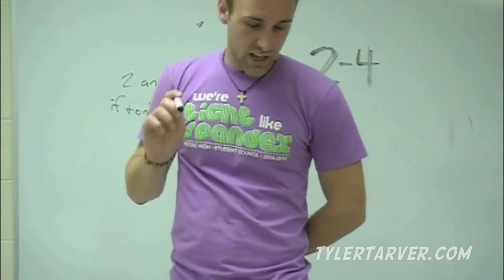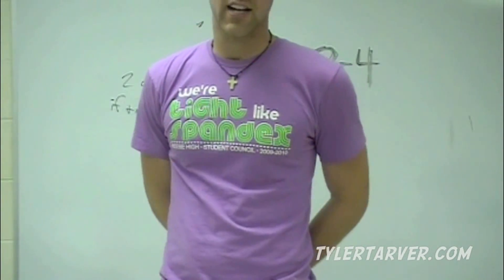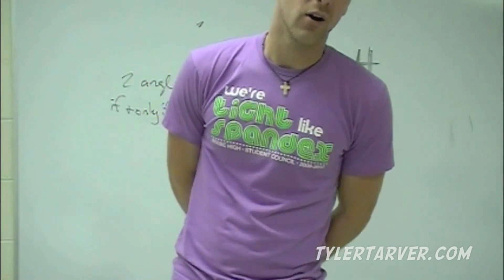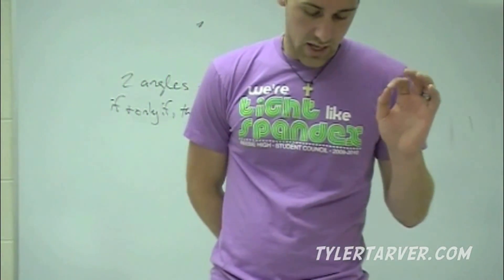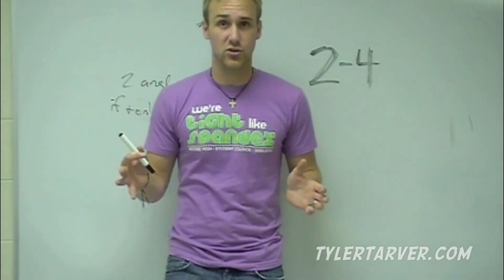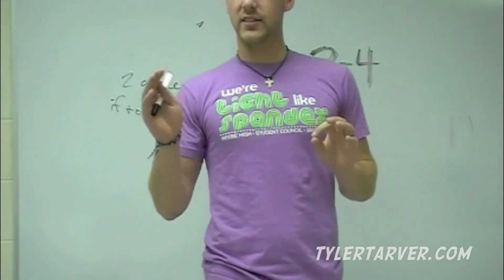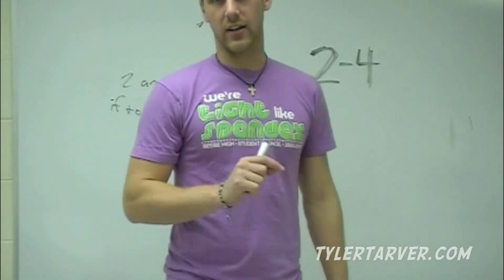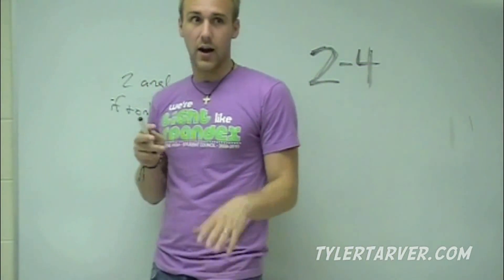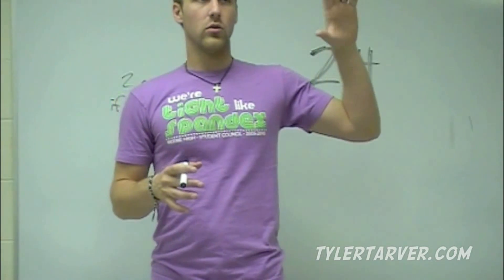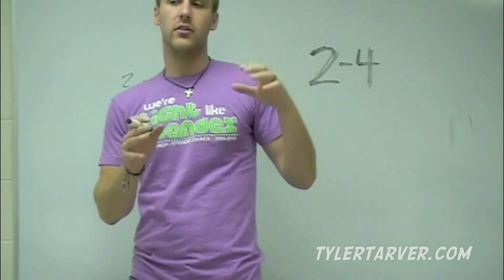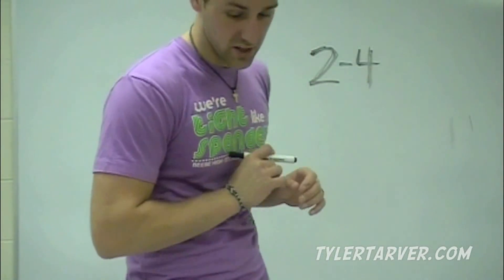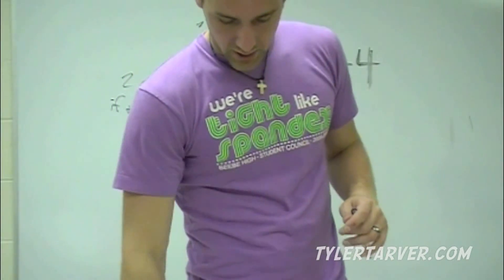Example: an angle is acute if its measure is greater than zero and less than 90. Is that true? Yes, all day. So: if an angle is acute, then the measure is between 0 and 90 — true. Switch it: if an angle's measure is between 0 and 90, is it acute? Yes. So you write it as: an angle is acute if and only if its measure is between 0 and 90. Stick 'if and only if' right where 'then' was.